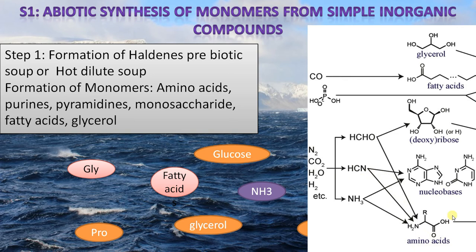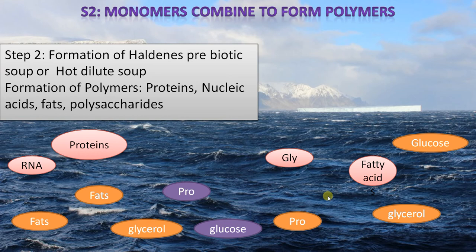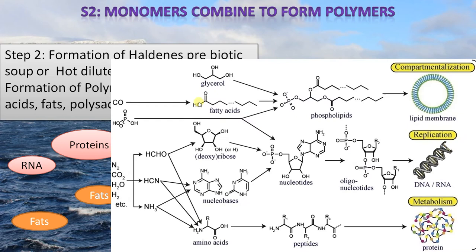Step two: monomers combine to form polymers. In this hot dilute soup, glucose, fatty acids, glycerol, and amino acids like glycine and proline combined to form polysaccharides, proteins, nucleic acids, fats, etc. Fatty acids and glycerol combined to form phospholipids; nitrogenous bases and deoxyribose or ribose combined to form nucleotides; amino acids joined to form short polypeptide chains, finally forming proteins.